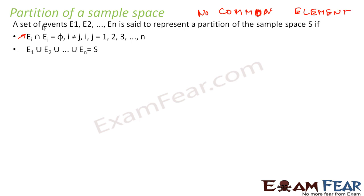Also, if you take the union of all these events, you get the sample space. And also, the probability of each of these events is non-zero — that is, they all have some probability.